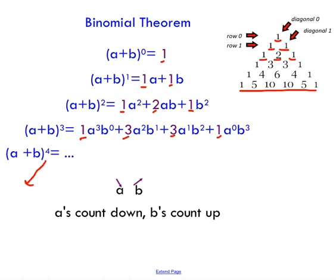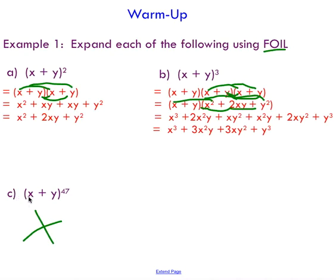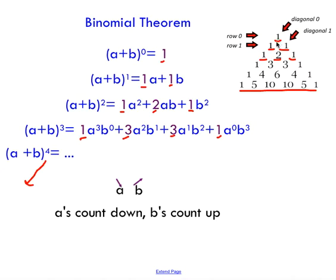So you can imagine applying this to a situation like x plus y to the 47. We just have to write out Pascal's triangle to the 47th row, write out our coefficients, and use this pattern. And we could essentially save ourselves a lot of time — it would still take a while, but not as long as doing it by hand.